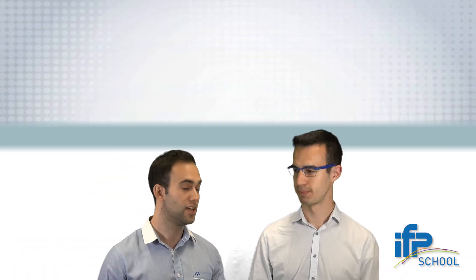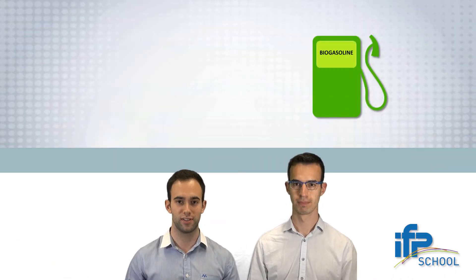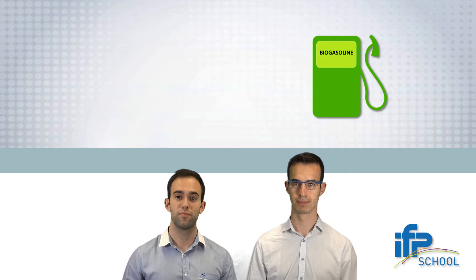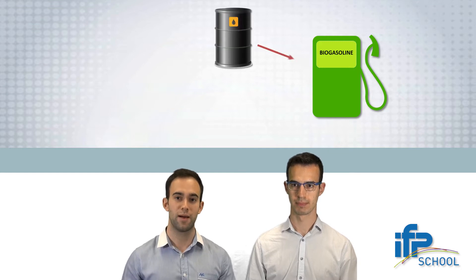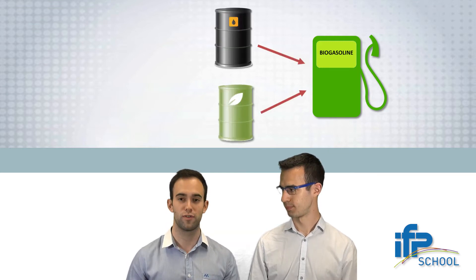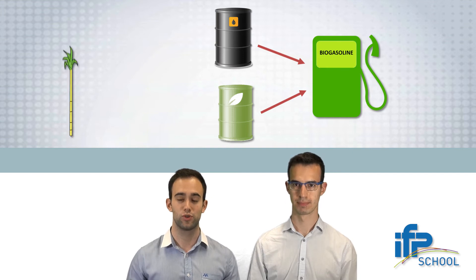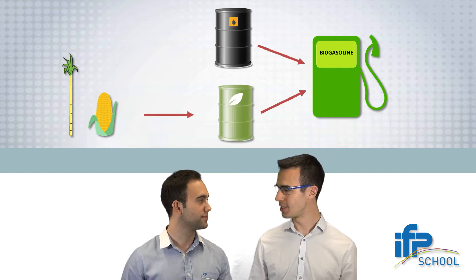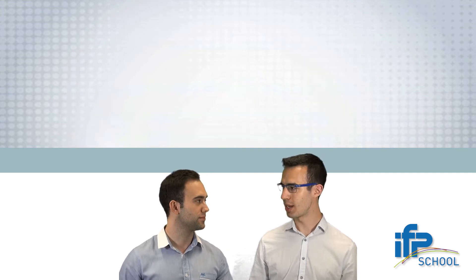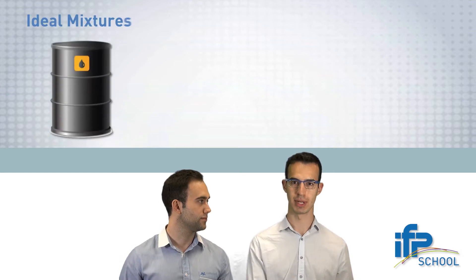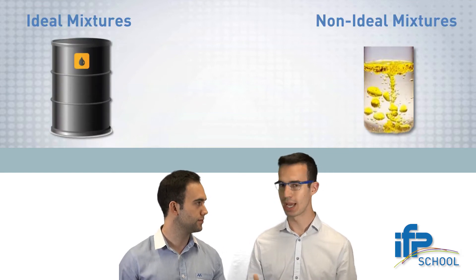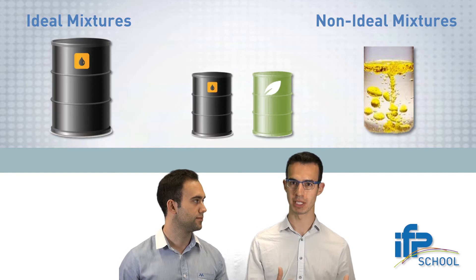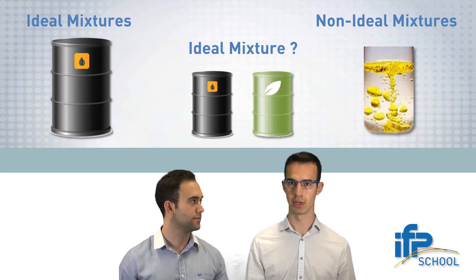Very good question, Albert. Biofuels refers to fuels which have some components made from biological sources. A very good example is biogasoline. Biogasoline is formed by a mixture of gasoline and bioethanol, which can be produced from different sources like sugarcane and corn. I see. Actually, I remember you told us about the difference between ideal and non-ideal mixtures, and you also mentioned that ethanol can mix both gasoline and water.